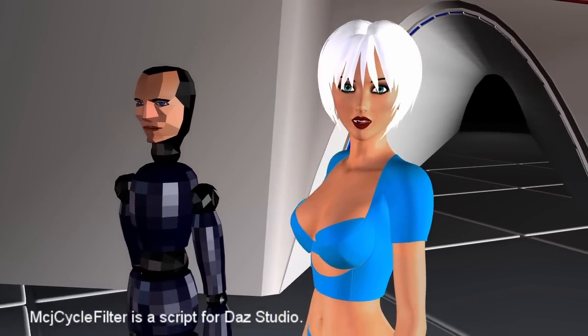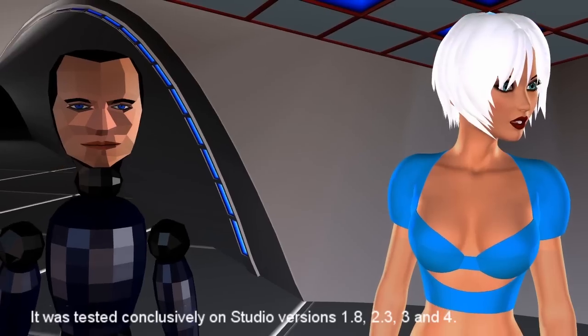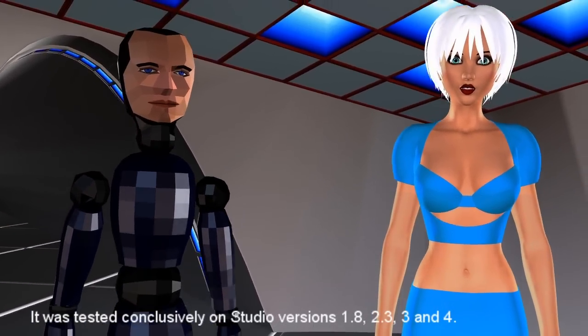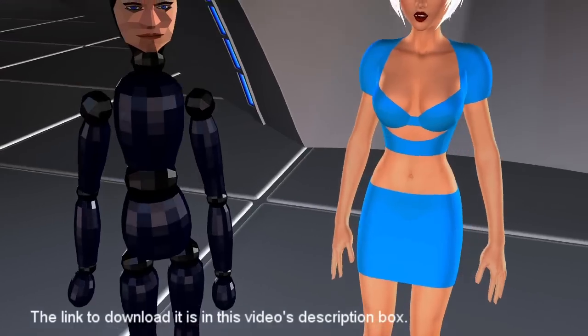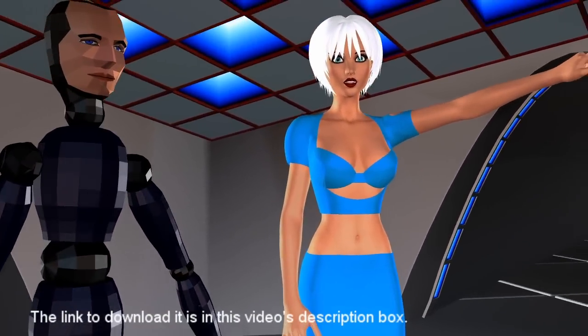MCJ Cycle Filter is a script for DAS Studio. It was tested conclusively on studio versions 1.8, 2.3, 3 and 4. The link to download it is in this video's description box.